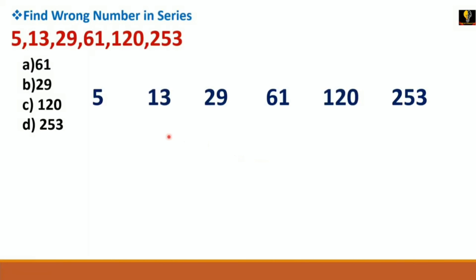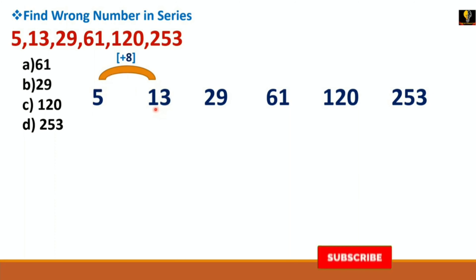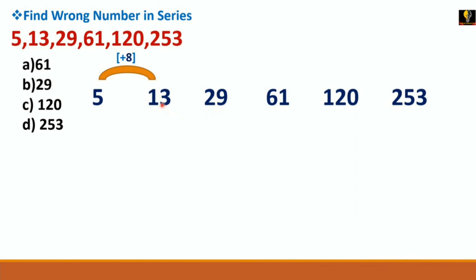First write the series: 5, 13, 29, 61, 120, 253. It also has an incremental form. Find the differences: 5 plus 8 gives 13, so the difference is 8. Then 29 minus 13 gives 16 — so addition of 16 into 13 gives 29.